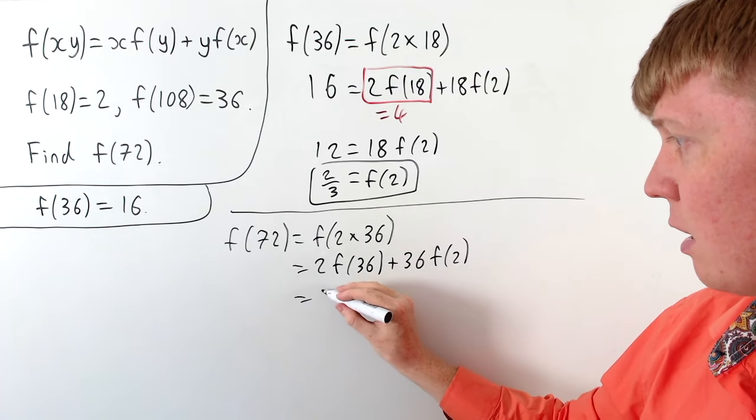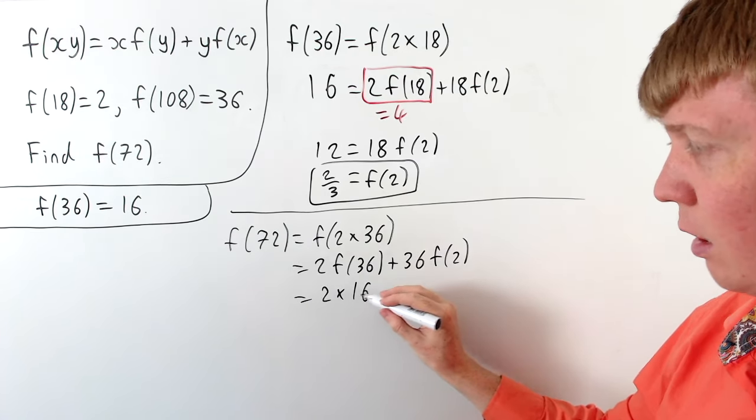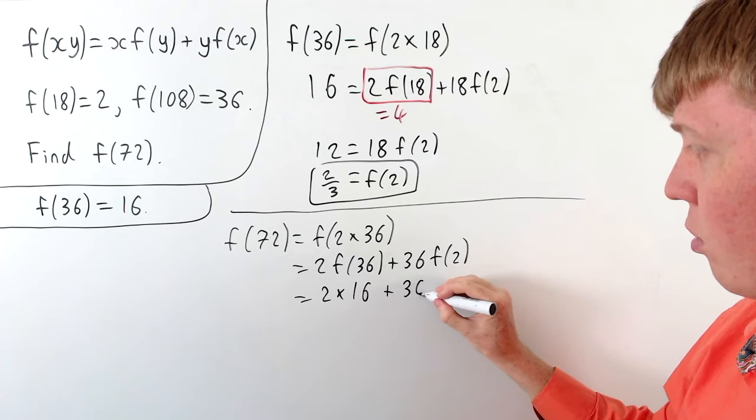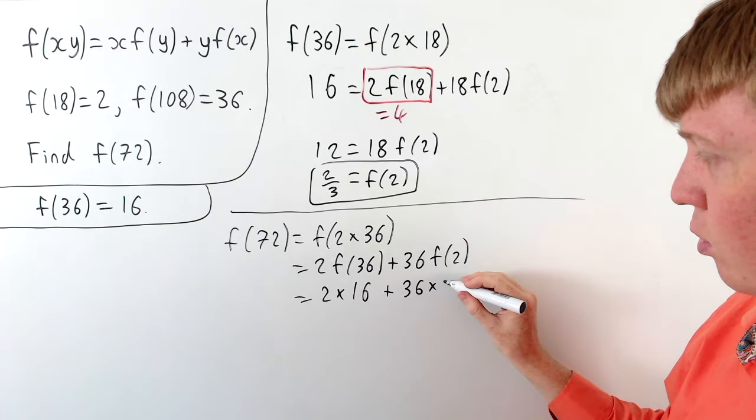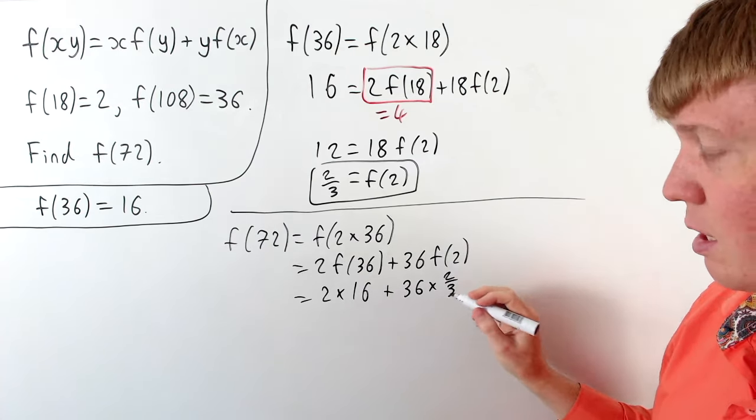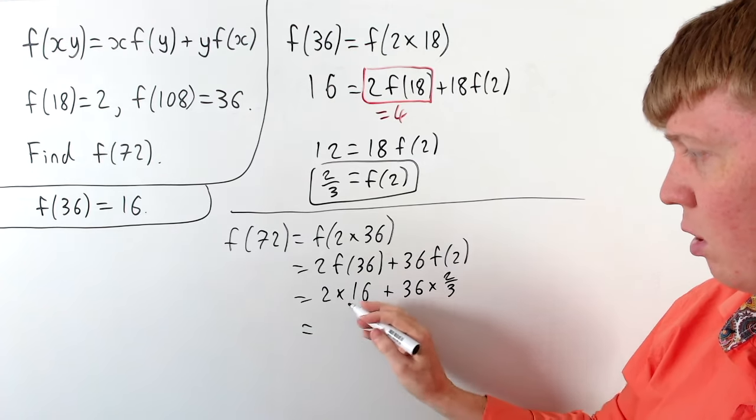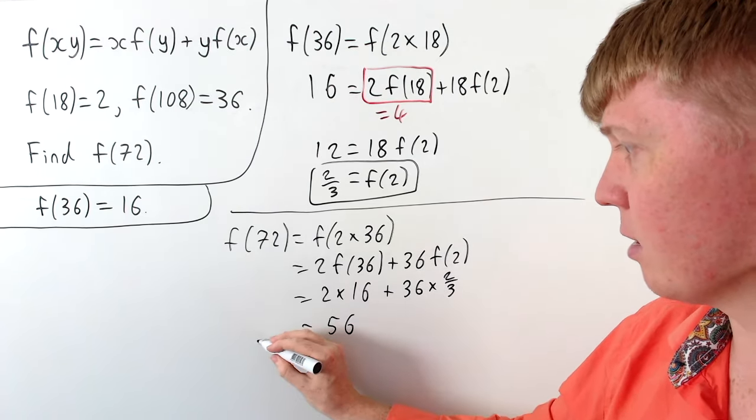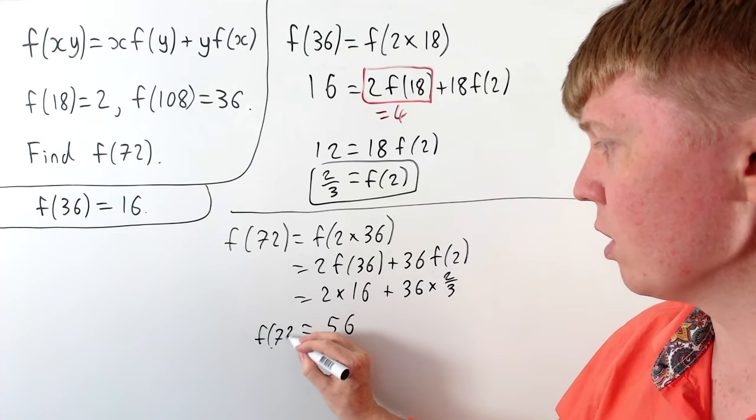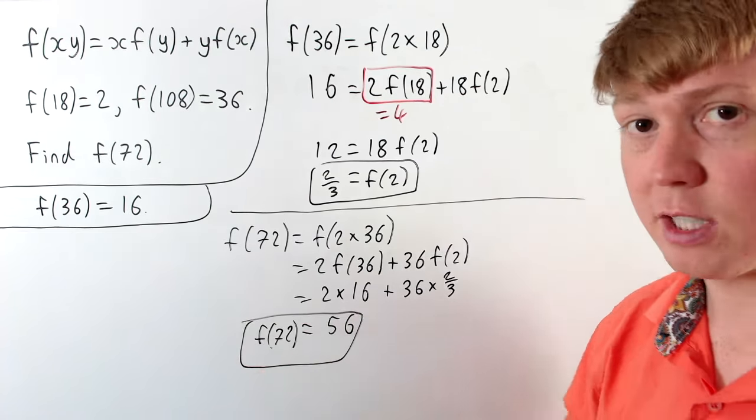So we get 2 f of 36 plus 36 times f of 2. So we know f of 36 is 16, so we've got 2 times 16 gives us 32. We've also got 36 times f of 2, so 2 thirds of 36 is 24. So 32 plus 24 gives us 56 as our final answer then for what is the value of f of 72.